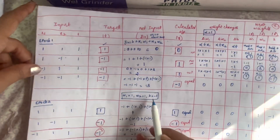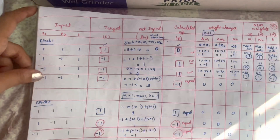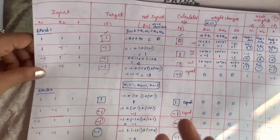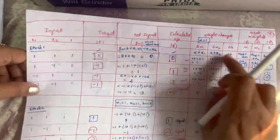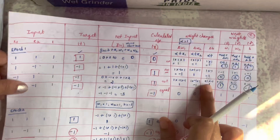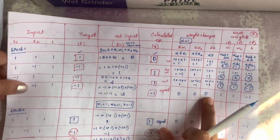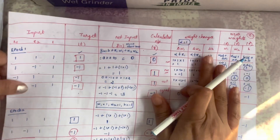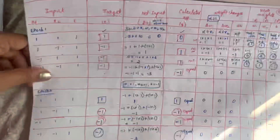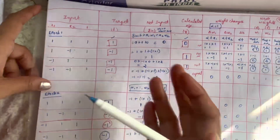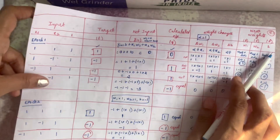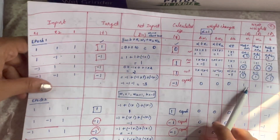Since there were weight changes during the first iteration — specifically in the first three input sets — we need to go for a second iteration. We must continue until there is no change in weights for all input sets. So we proceed to approach 2, using the weights w1=1, w2=1, b=-1 obtained from approach 1 as our starting weights.